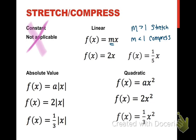With absolute value, we have a value out front of the absolute value of x. For our parent function, that's just a 1 because there's nothing there. So if we make it a 2 or a 1/3, we are stretching or compressing. So same idea with the m. If a is greater than 1, we stretch. If a is less than 1, we compress.